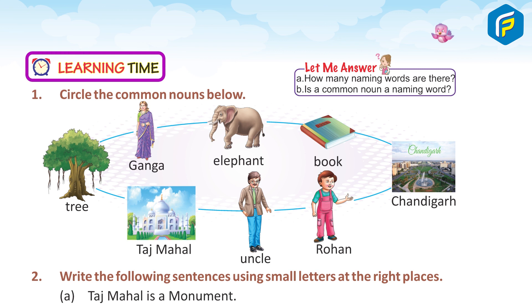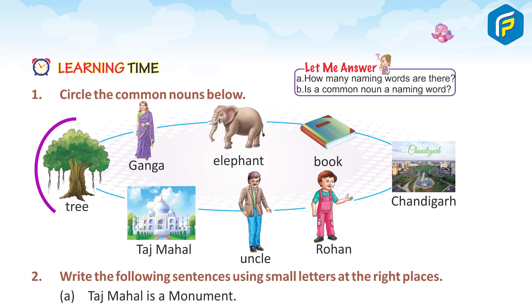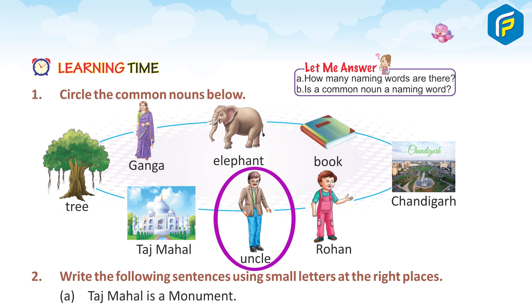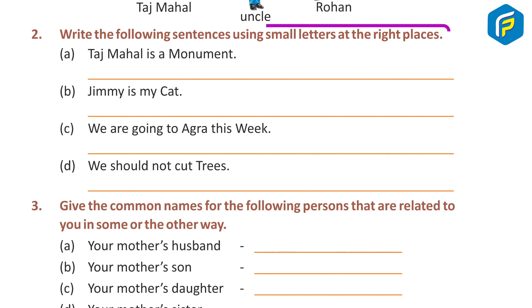Learning Time. Exercise 1: Circle the common nouns below. Answer: Circle tree, uncle, book.